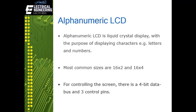Since we are using an alphanumeric LCD, it is a liquid crystal display used for displaying characters — that is, letters or numbers. The most common sizes are 16x2 and 16x4, meaning they have either 2 or 4 rows of 16 characters each. For controlling the LCD, there is a 4-bit data bus and 3 control pins, so we need 7 microcontroller pins to interface with it.